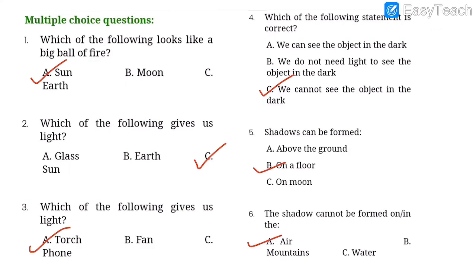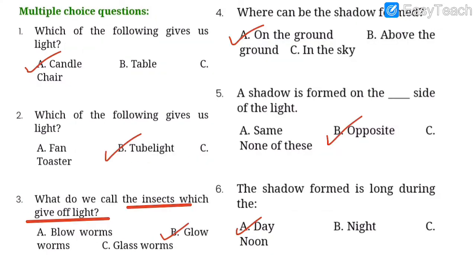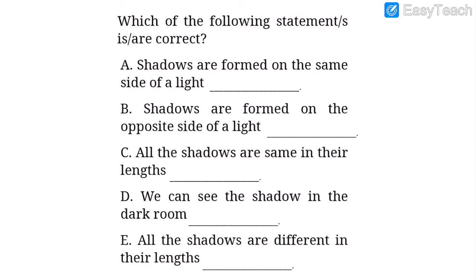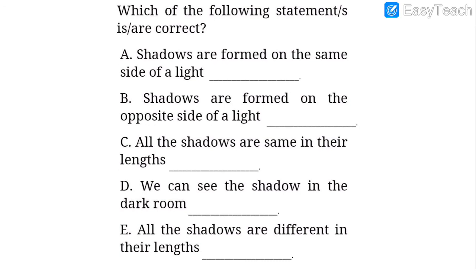We completed the MCQ — six on the first page and six on the second page, twelve total. Now let us do true or false. Number one: shadows are formed on the same side of light — false. They are formed on the opposite side, so we put a cross mark.